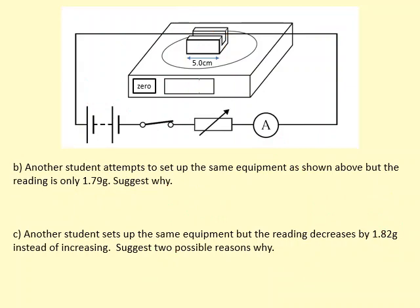Another student attempts to set up the same equipment as shown above, but the reading is only 1.79. So instead of being 1.82, it's 1.79. This means it's a smaller reading, so that's possibly because the student hasn't aligned the wire perfectly perpendicular. So it might not be perpendicular. So we have to use sine of the angle, which clearly gives us something less than the maximum force.